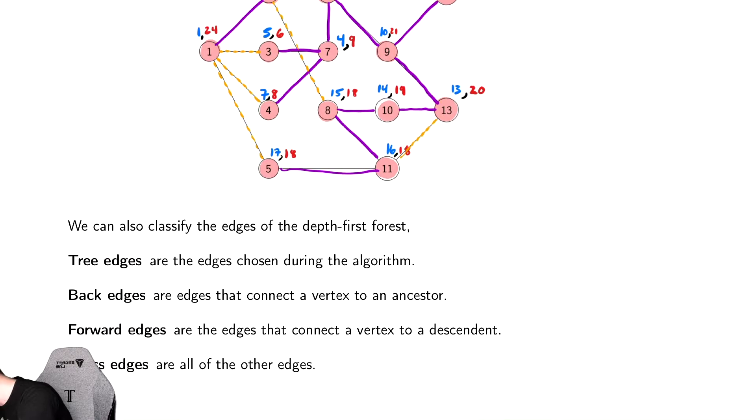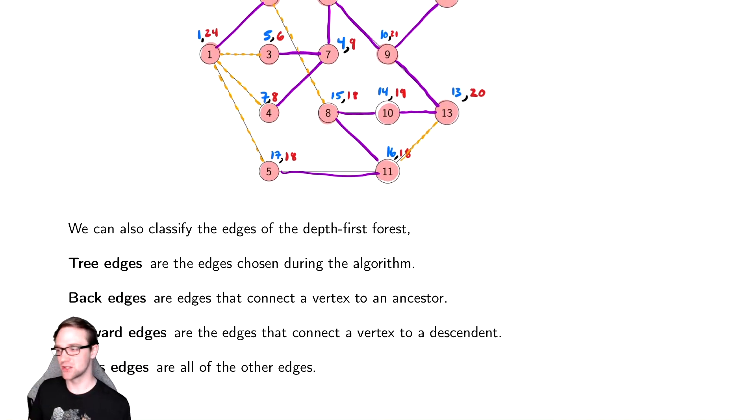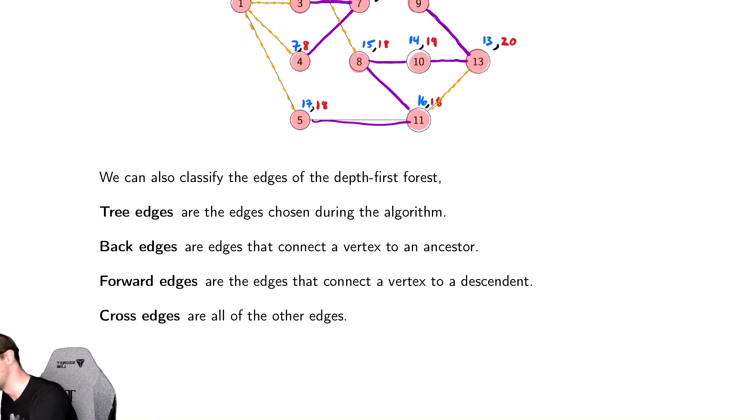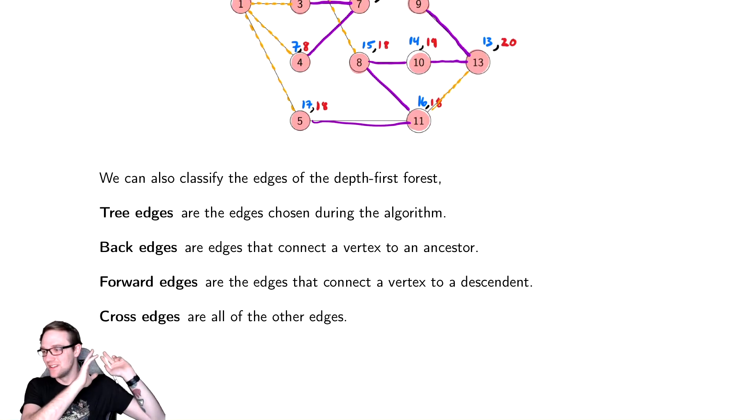So you have three different ways of classifying edges. There's four things here. They're really all the same in the way I realized. So there are four different types of edges, tree edges, the ones that are in purple.